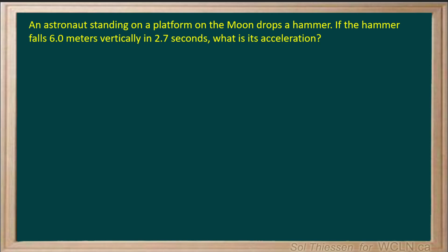Ok, so let's write down what we know. We're assuming that the hammer starts from rest, so it's dropped with no initial velocity. We know the displacement of the hammer. This displacement is downward, so it'll be negative 6.0 meters. We know the time interval, 2.7 seconds, and we want to know the acceleration.